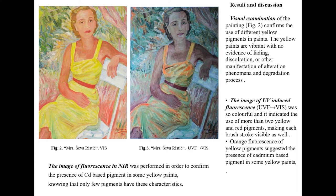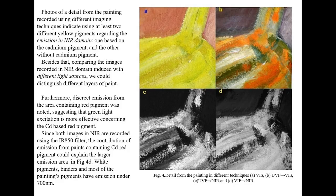On this slide you can see a photo of the observed painting in the visible region and a photo of UV-induced fluorescence in the visible region, which confirms the use of different yellow pigments in the paints. The yellow paints are vibrant with no evidence of fading, discoloration, or other manifestations of alteration phenomena and degradation processes. Orange fluorescence of yellow pigments suggested the presence of cadmium-based pigment in some yellow paints. Photos of details from the painting recorded using different imaging techniques indicate the use of at least two different yellow pigments regarding emission in the IR domain — one based on cadmium pigment and the other without cadmium pigment.